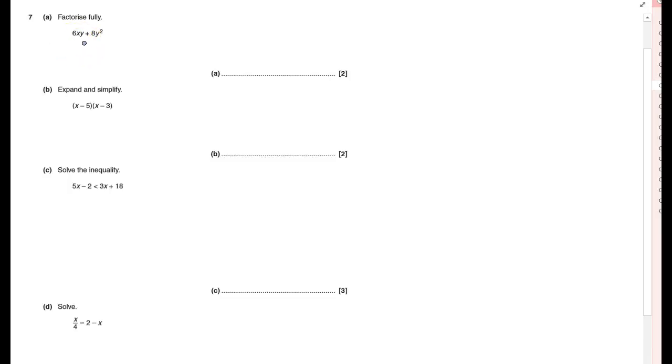Factorize fully - that means everything which goes into it. Look at numbers first, 6 and 8. Two goes into that, so I can take out 2. Anything else going into both? X doesn't go into this one.